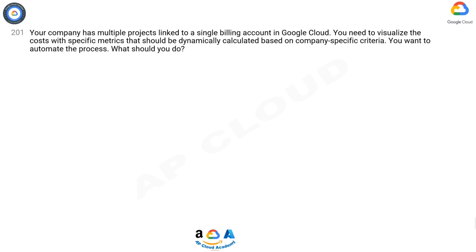Question 201. Your company has multiple projects linked to a single billing account in Google Cloud. You need to visualize the costs with specific metrics that should be dynamically calculated based on company-specific criteria. You want to automate the process. What should you do?